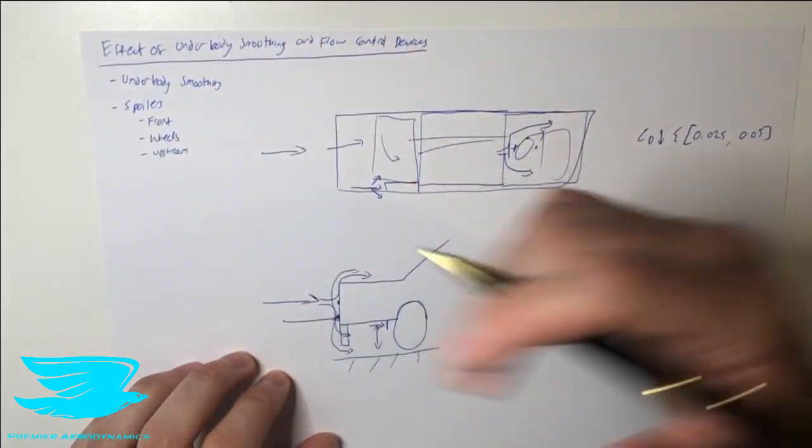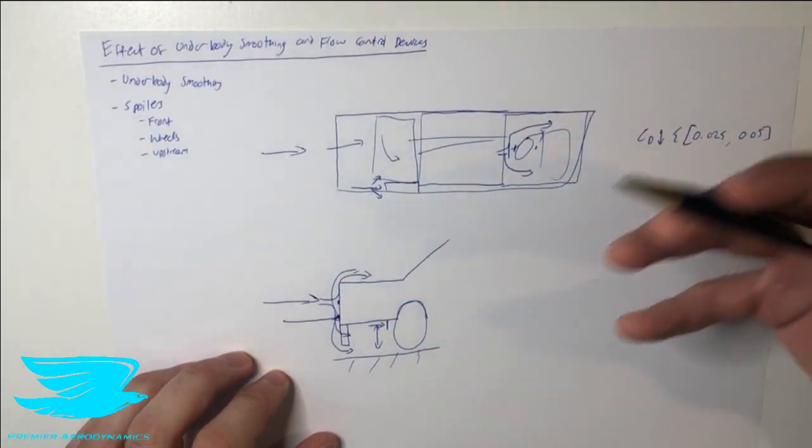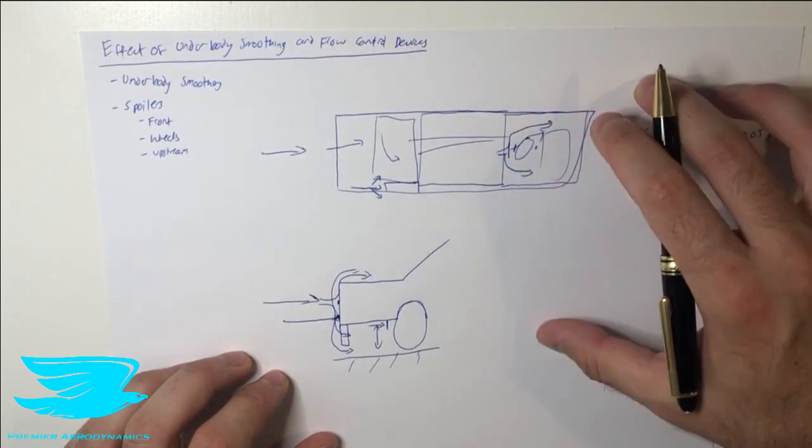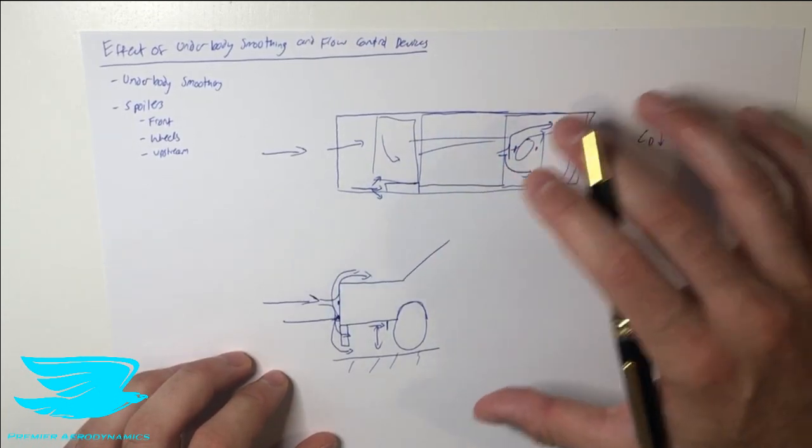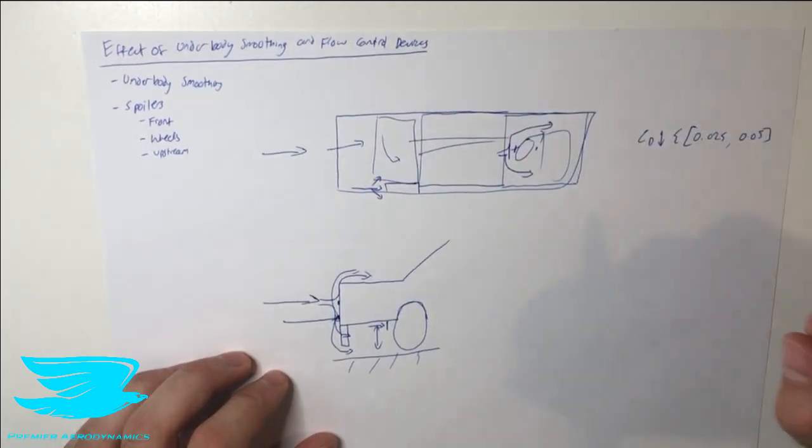If we were to use these spoilers, often we'll get maybe for the front spoiler, wheels, and upstream, depending on what we're looking at, we might get between 5 counts and 15 counts, depending on the vehicle and what we're looking at. But covering the underbody is by far usually the most effective way of reducing the drag, and this is mainly because of the reduced pressure drag.